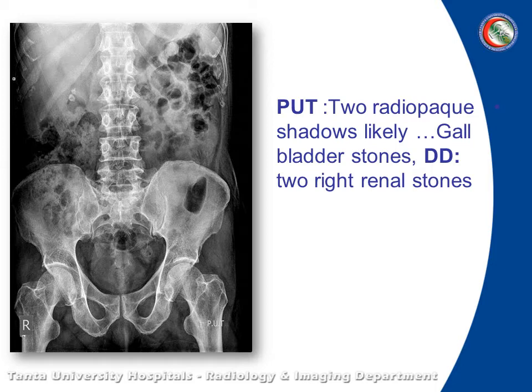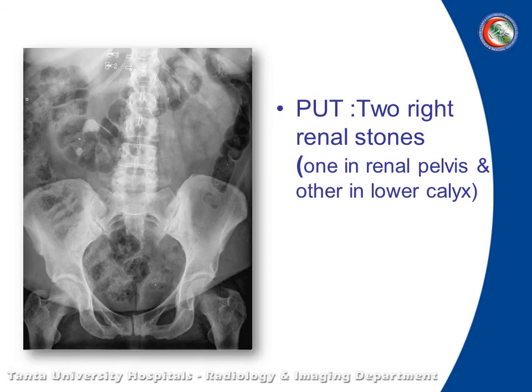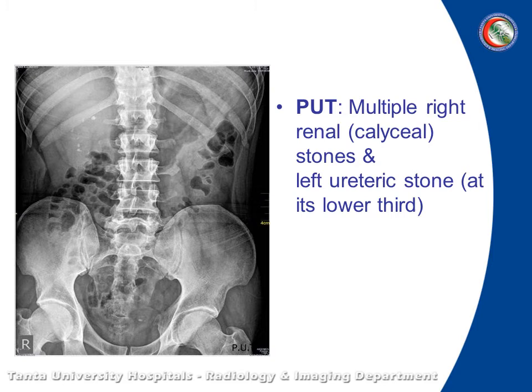This is a radio-opaque shadow in the right hypochondrium, likely to be gallbladder stone with differential diagnosis of right renal stone. Here is renal stone, very obvious. Multiple renal stones — multiple calyceal renal stones. There is also a left urinary tract stone. Here is a sign called the happy eye sign — when you easily identify one finding, like a right renal calculus, don't neglect the rest of the image. You should observe each part, as there may be hidden abnormalities — don't miss this small urinary tract stone.